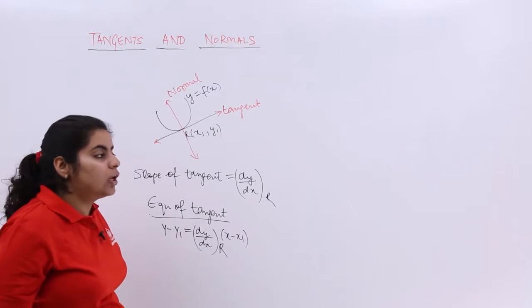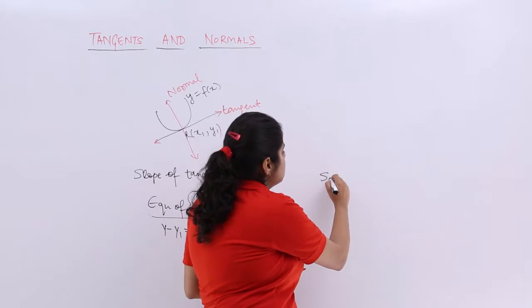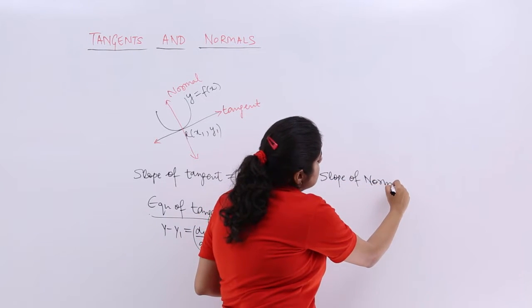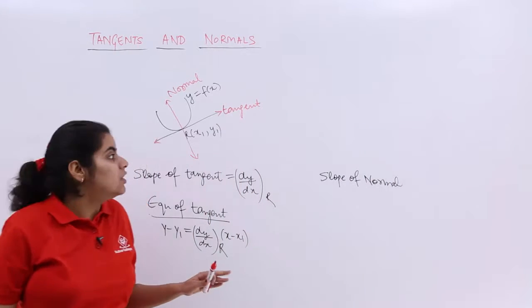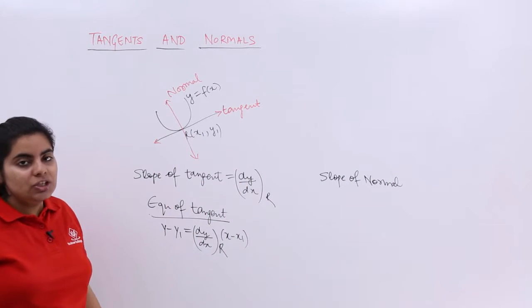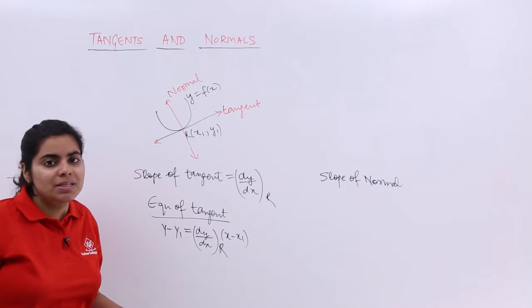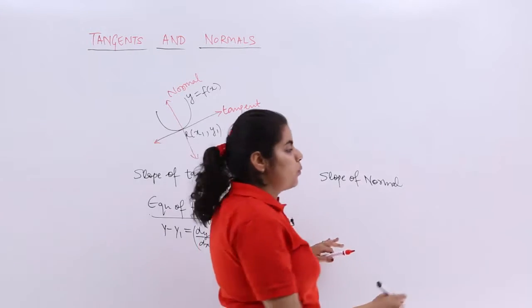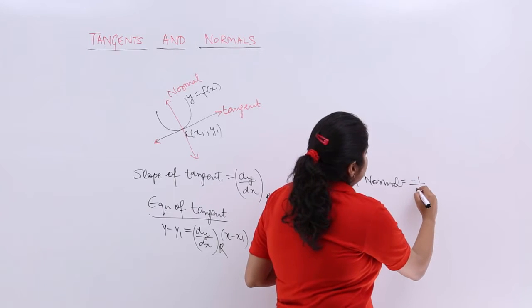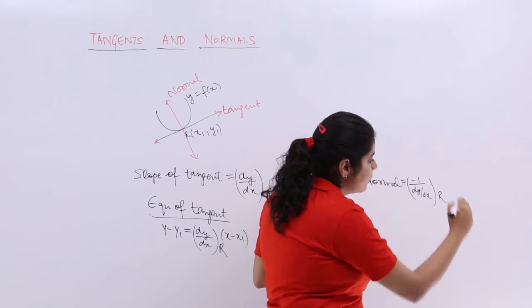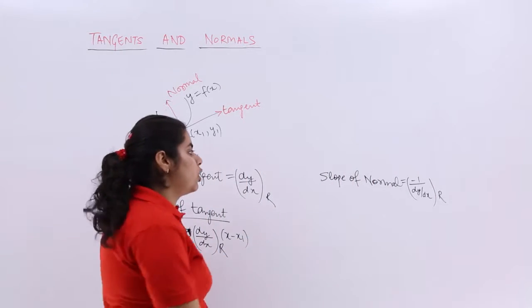Next, when we have the knowledge about slope of tangent, let's talk about normal. Slope of normal: since I say that my normal and tangent are at 90 degrees to each other or are perpendicular to each other, the condition of perpendicularity has to be satisfied. So it is nothing but slope of normal which is minus 1 upon dy/dx at point r, and then the equation of normal is not difficult.